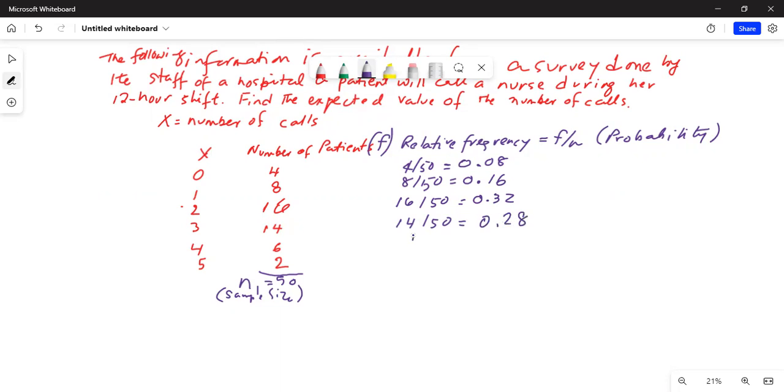Next one will be 6 divided by 50, so 6 divided by 50 is 0.12.